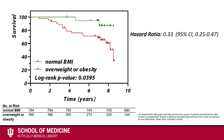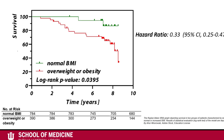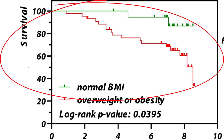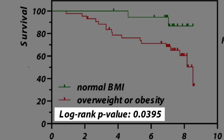It is acknowledged that there is much controversy surrounding the use of BMI and measures like it. This chart is only shown as an example. It looks at the survival of patients with normal BMI compared to the survival of patients who are overweight or obese. Visually, it looks like there is a difference between the two groups. The log rank test provides a p-value of 0.0395, which is less than 0.05, and indicates that there is a statistically significant difference between the normal BMI group and the overweight obese group.